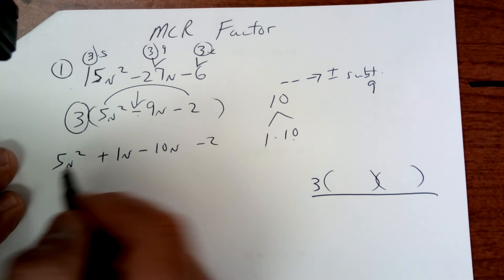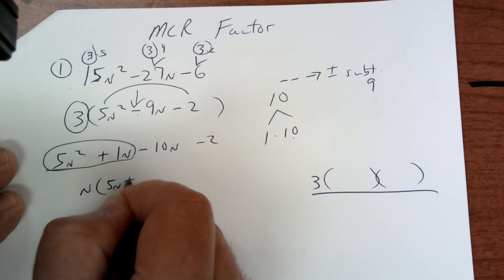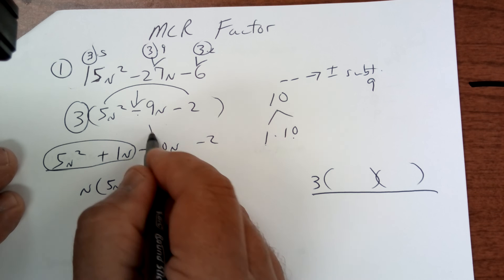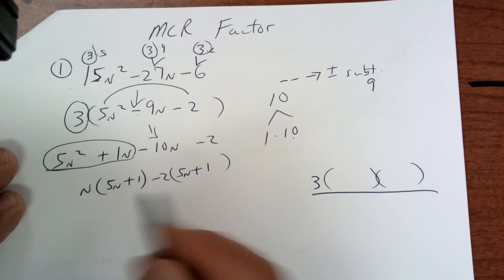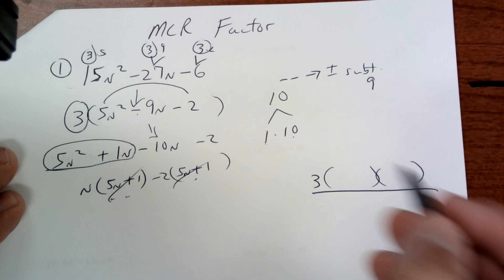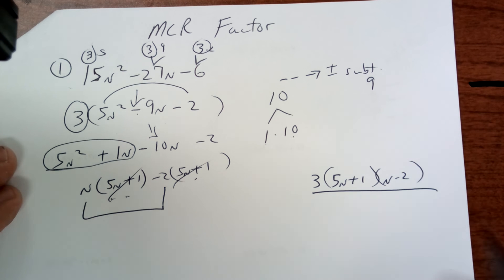So here you're going to factor out an n. And you're left with 5n plus 1. Here you're going to factor out a negative 2. And you're left with 5n plus 1. Both of these are in common. So you're going to take out a 5n plus 1. And you're left with an n minus 2. And that's how you do today's worksheet.